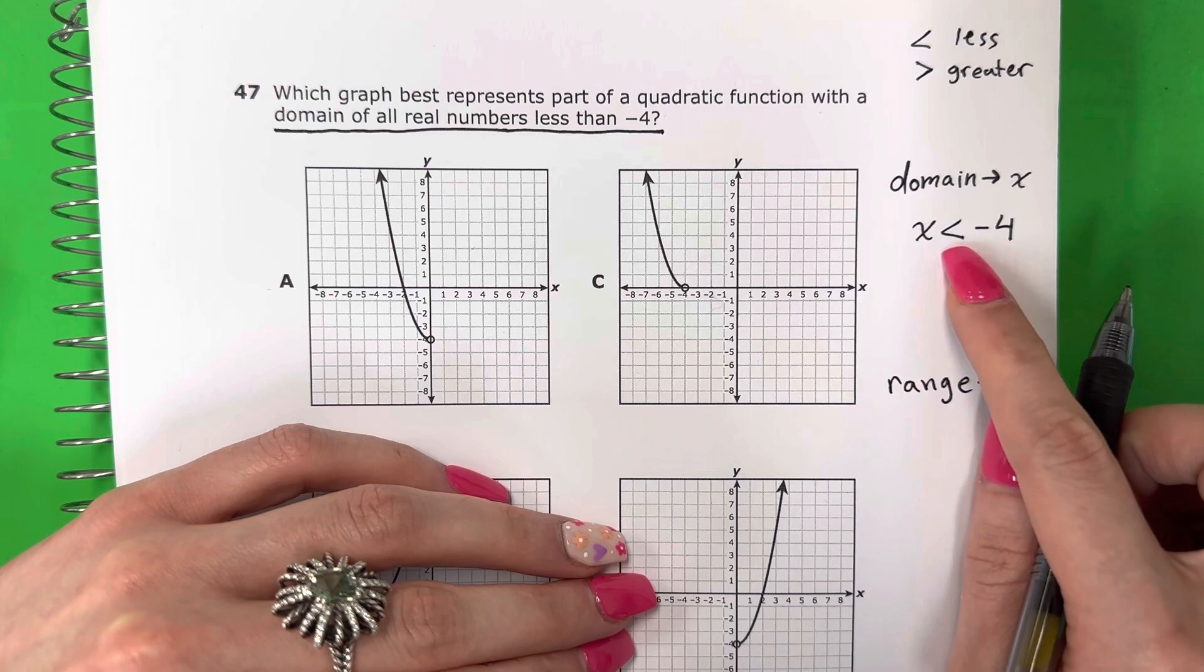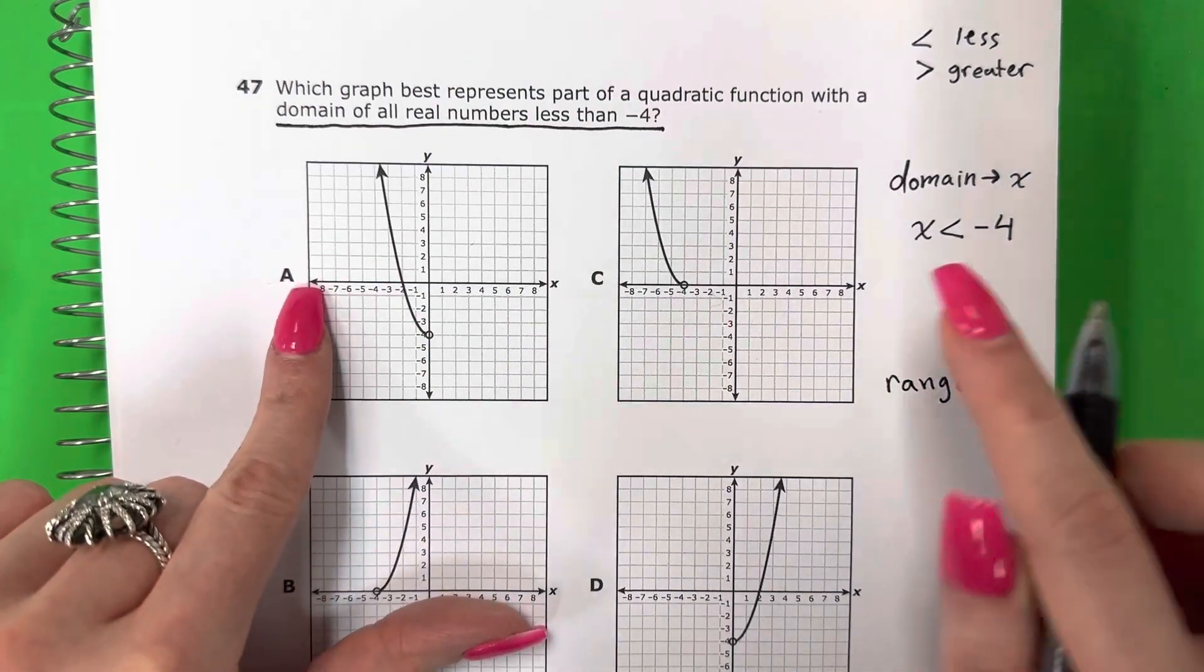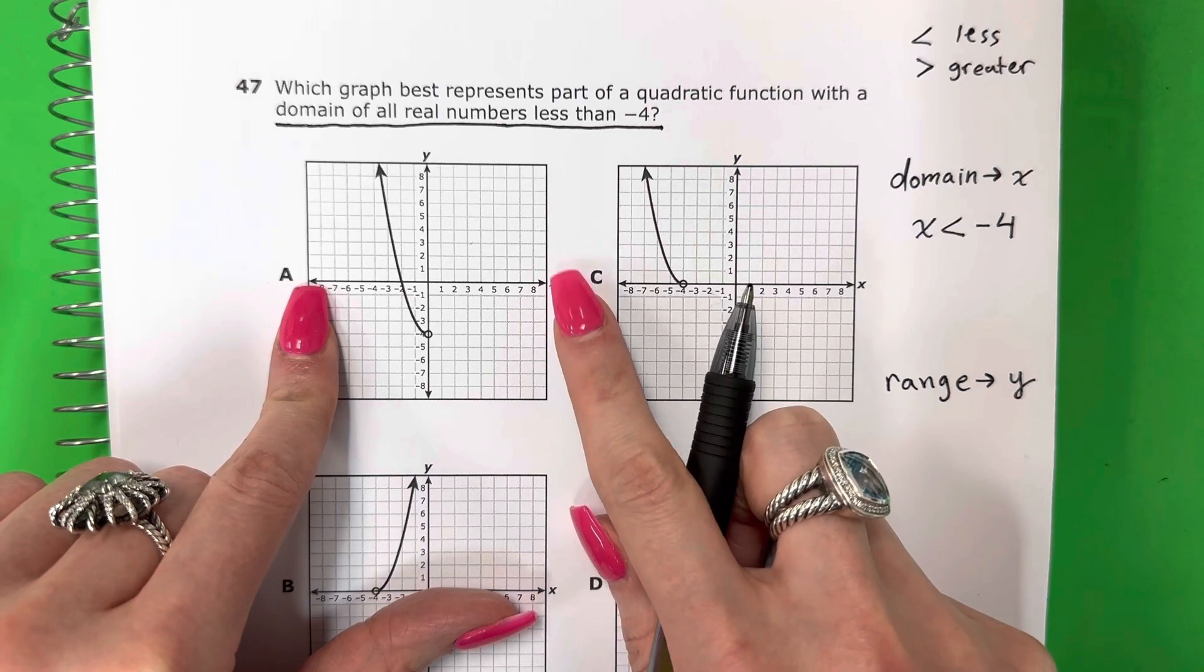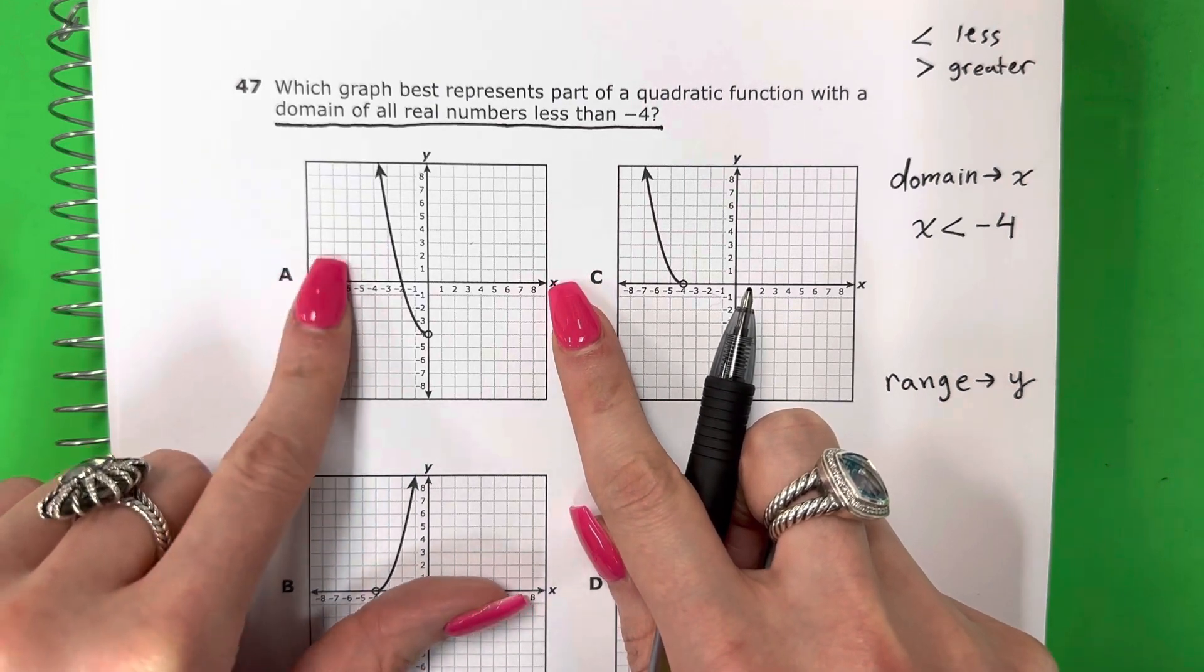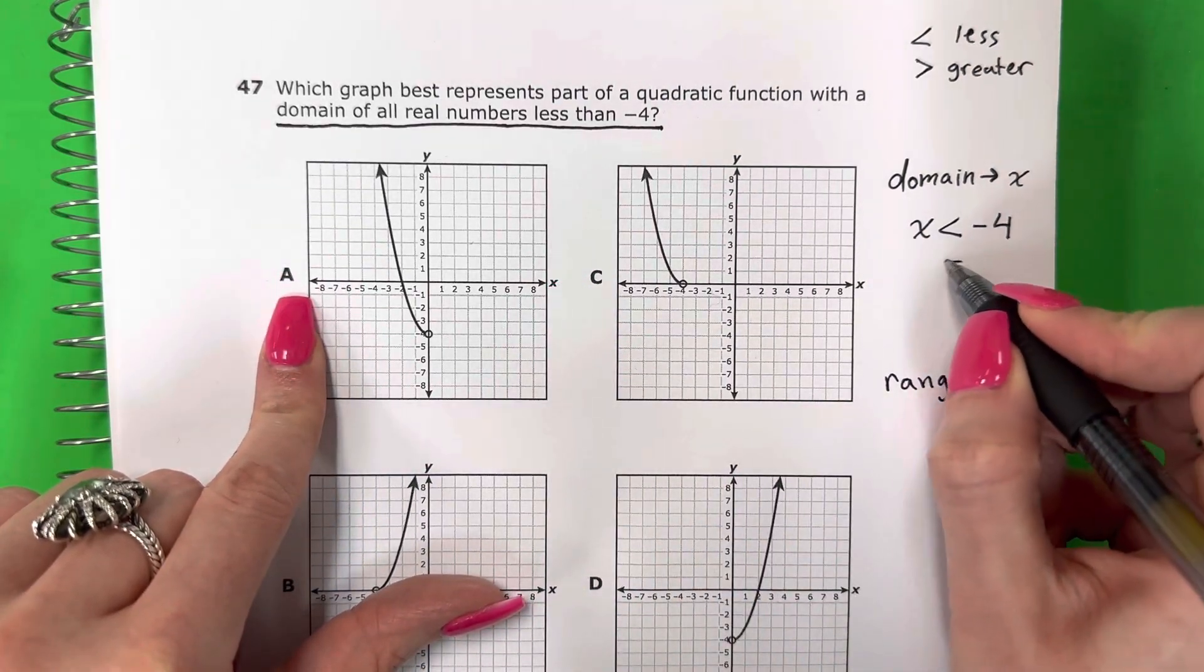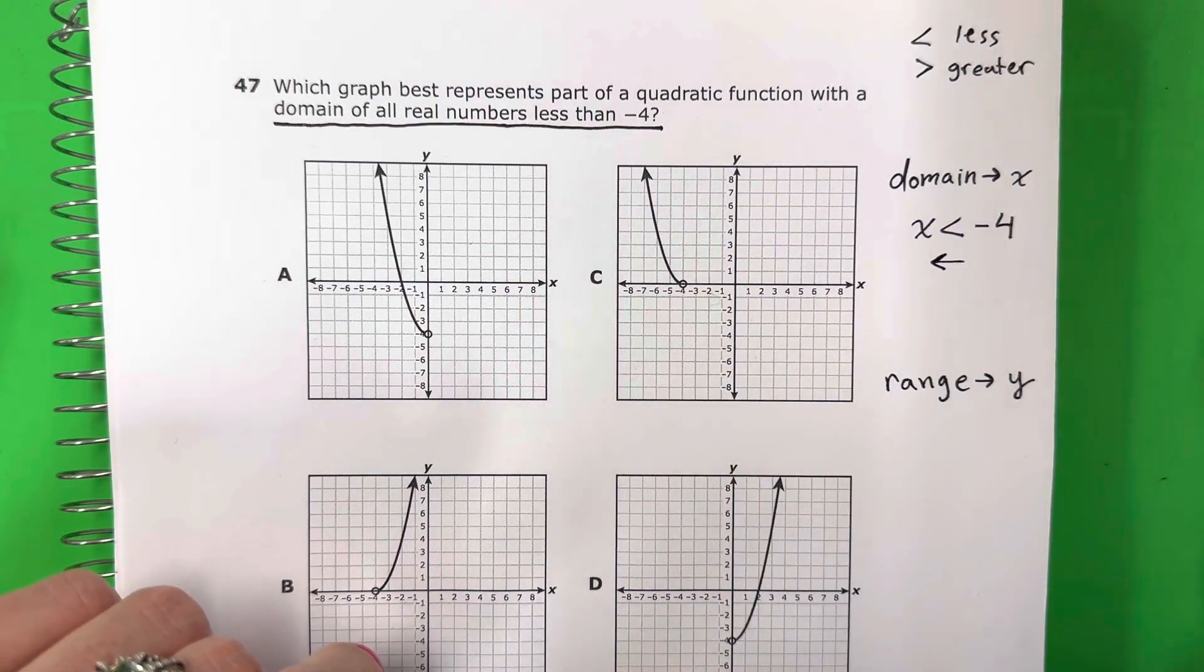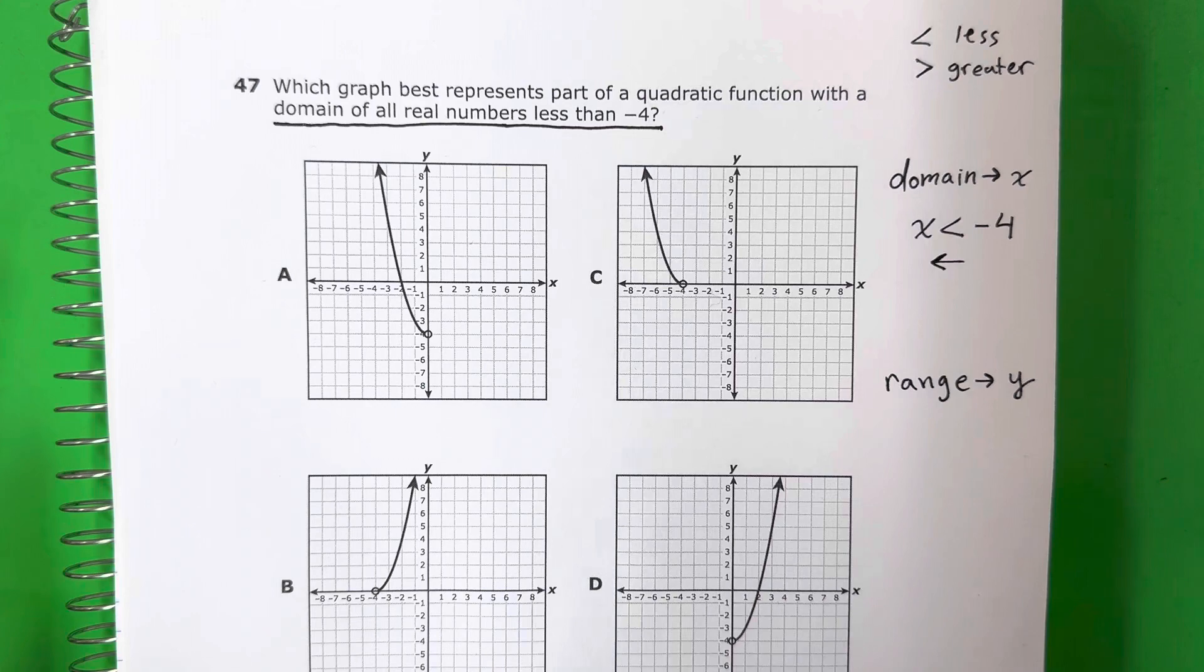And this is less, menor que. So which one is the less? Left, izquierda, or right, derecha? The left is the less. La izquierda es lo menor. So I want something less than negative 4. Quiero algo menor que negativo 4.